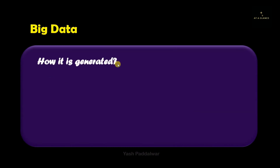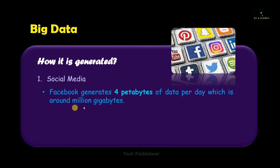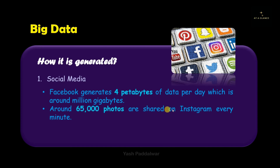Now let's look at real-life examples of how big data is generated. The most common and popular example is social media — everyone uses social media nowadays. Have you ever imagined how much data Facebook generates? It generates four petabytes of data per day, which is around a million gigabytes. Mathematically, one petabyte equals 10 to the power 15 bytes. Around 65,000 photos are shared on Instagram every minute, so you can imagine how much image data is generated each day.